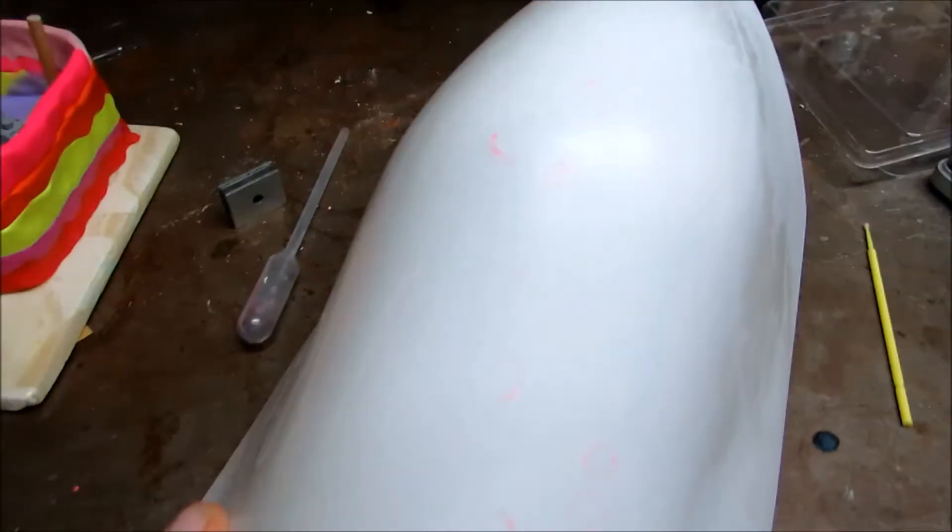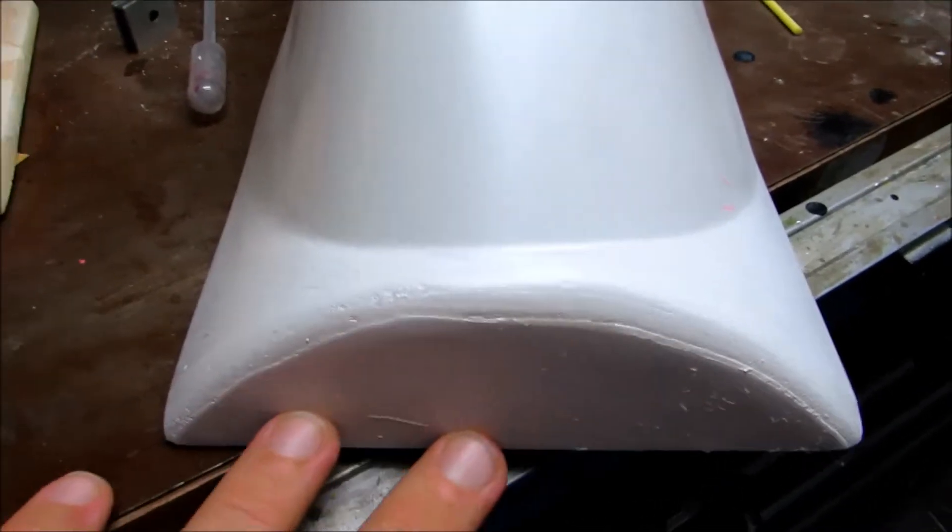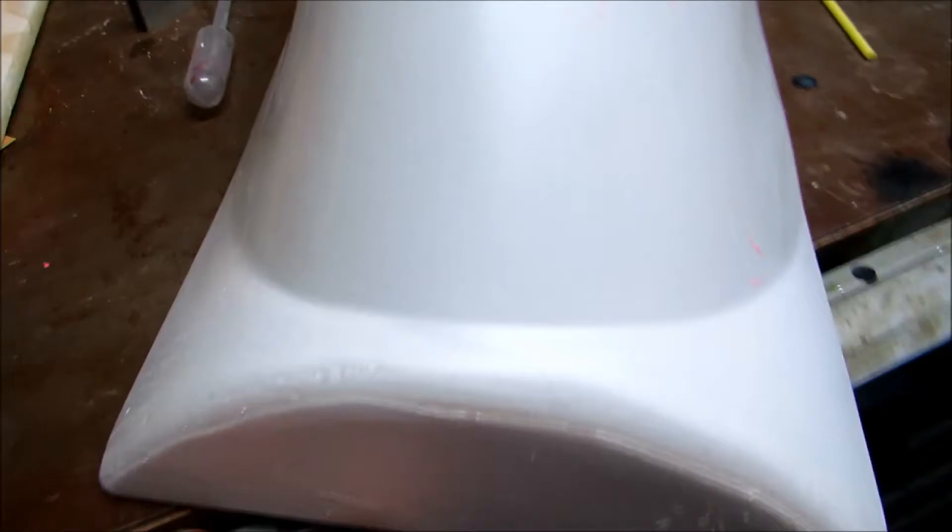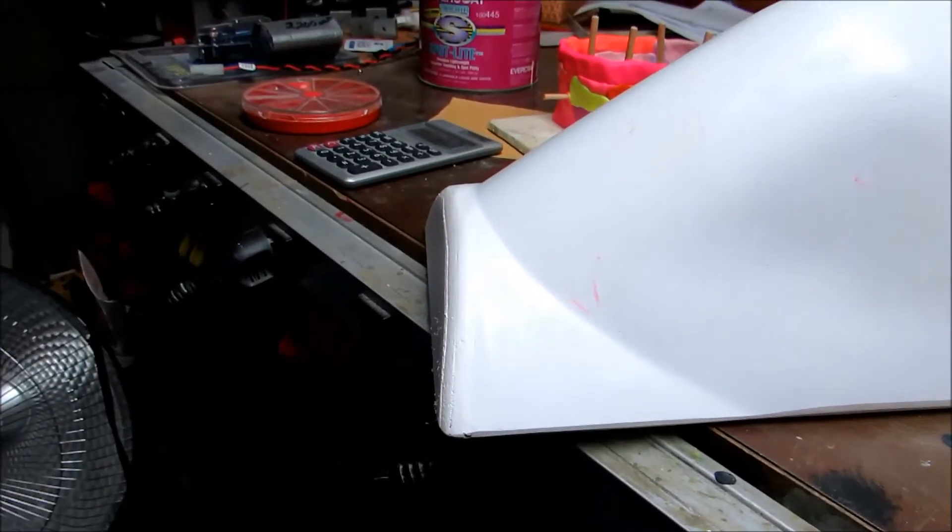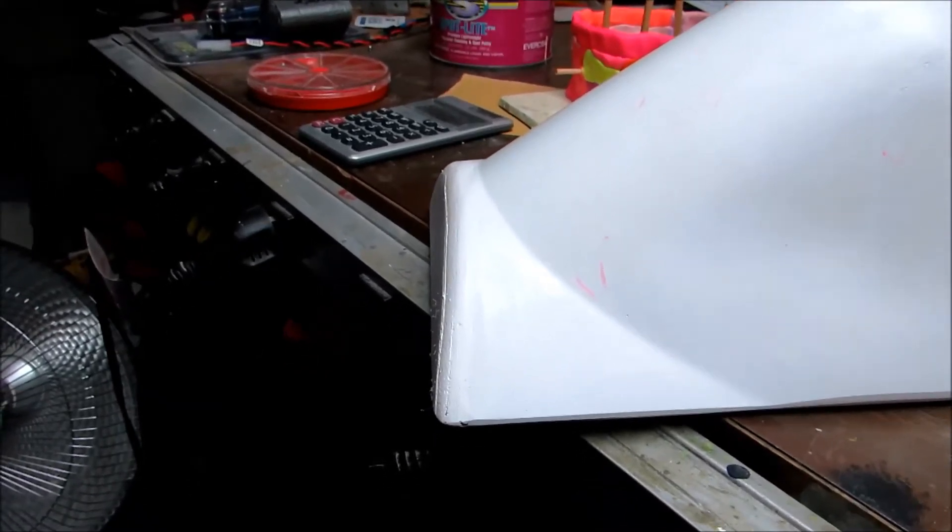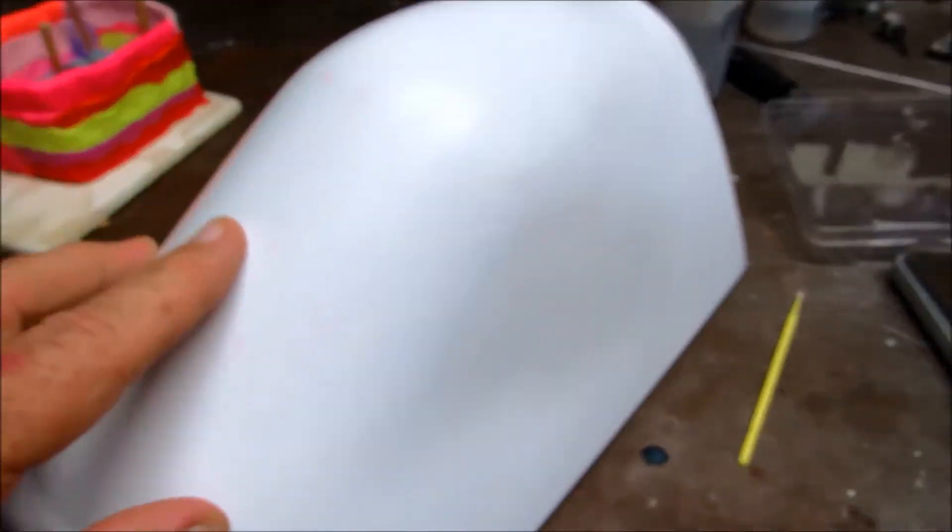I filled them with Evercoat and sanded them all down, and I have since added a front here that was made out of balsa and glassed it in order to give a little bit better release angle for the plastic when the vacuum molding happens.